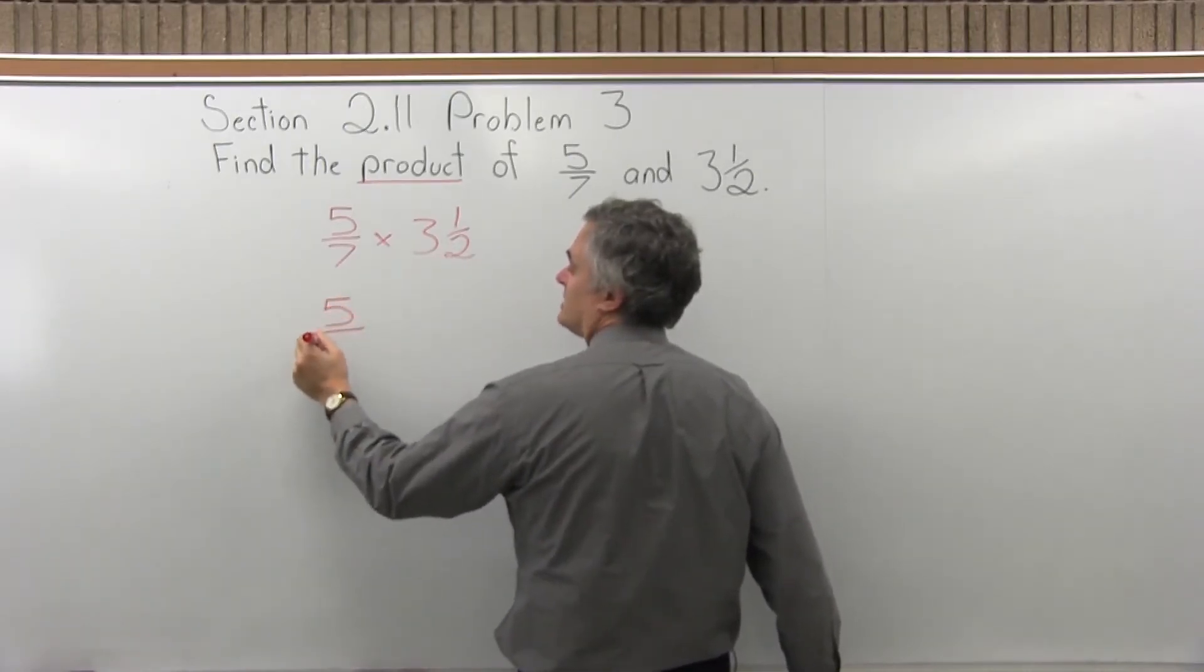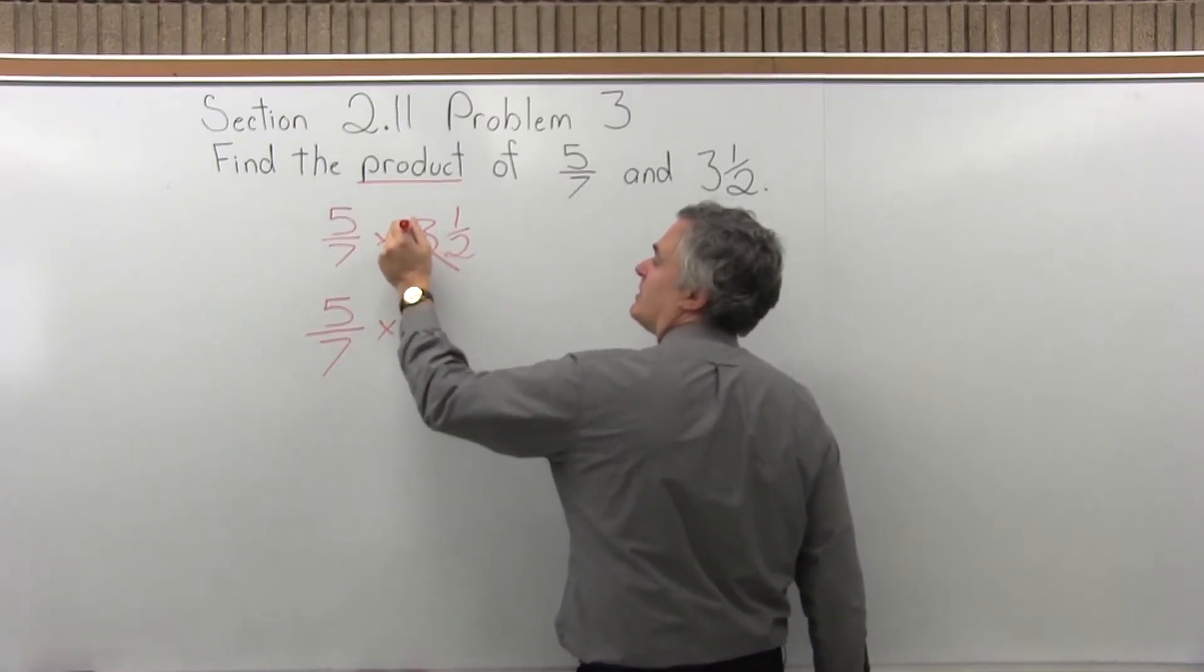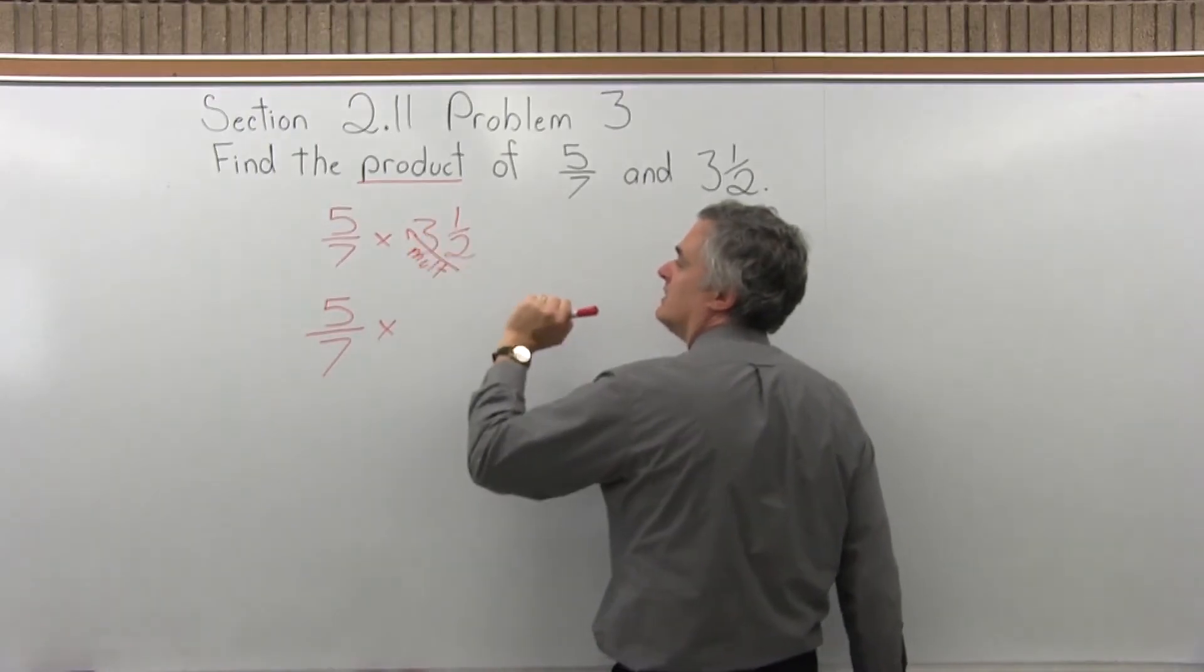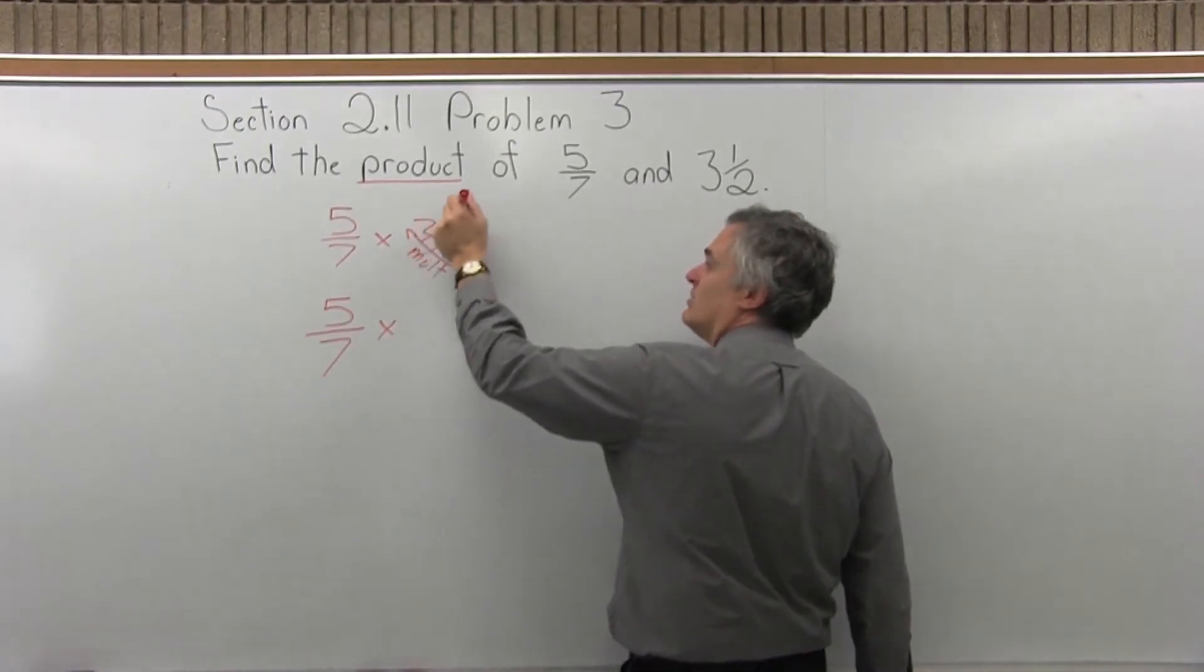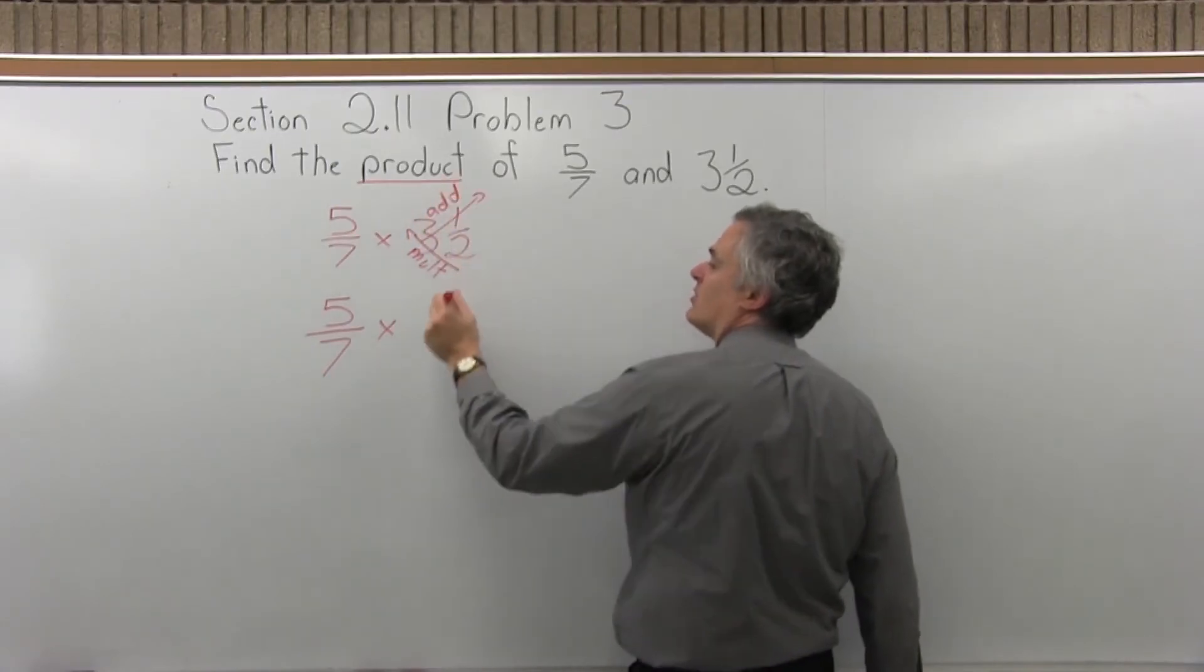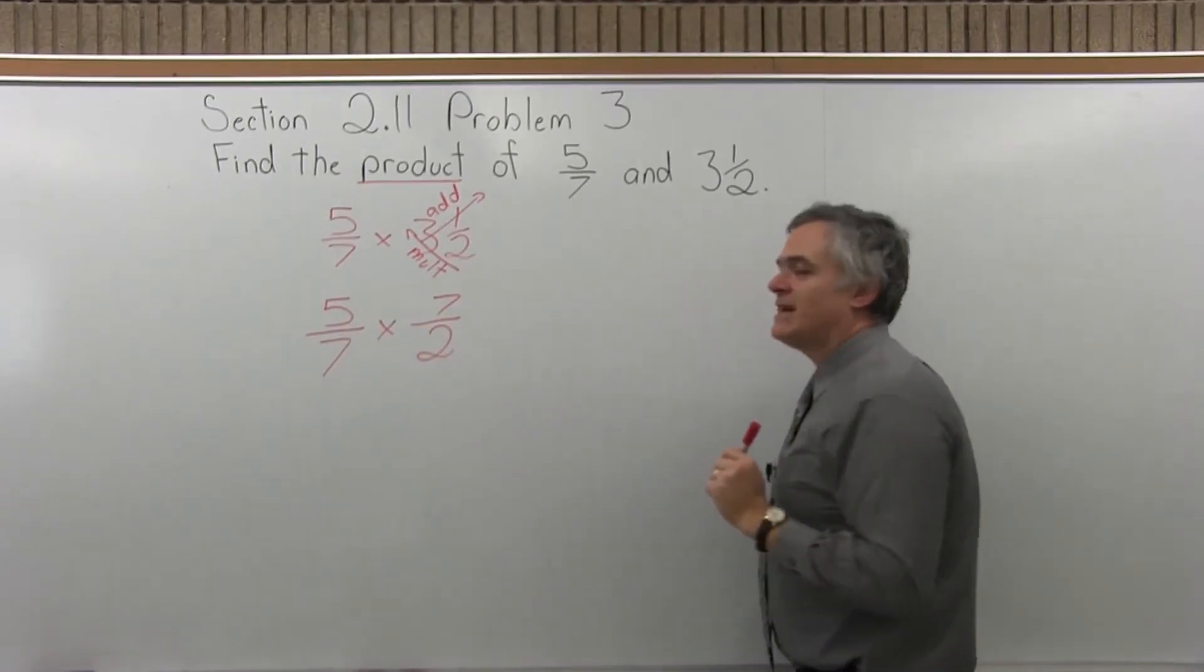Improper fraction means the numerator is larger than the denominator. So to do that, we will multiply the denominator times the number in front. So we multiply 2 times 3, 2 times 3 is 6. We take that result of 6 and we add it to the numerator. 6 plus 1 more is 7. So 3 and a half can be written as 7 halves.